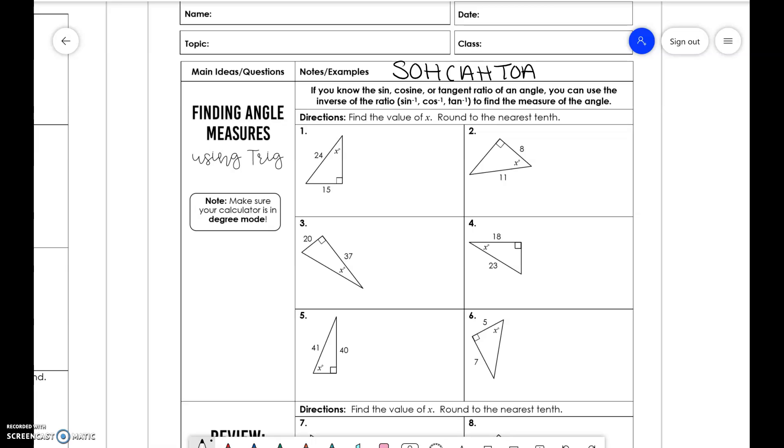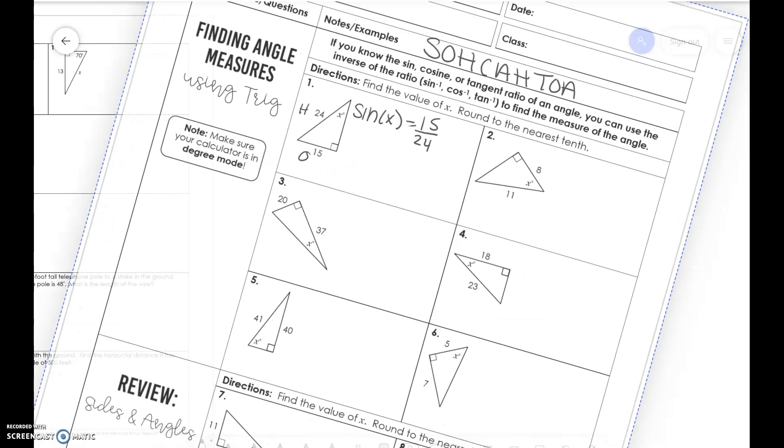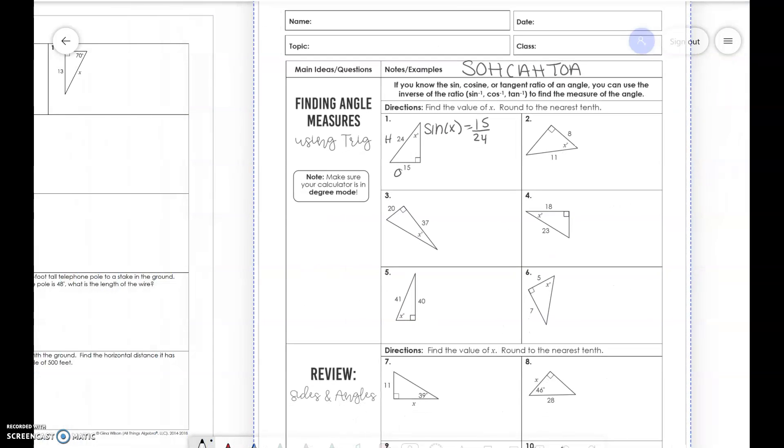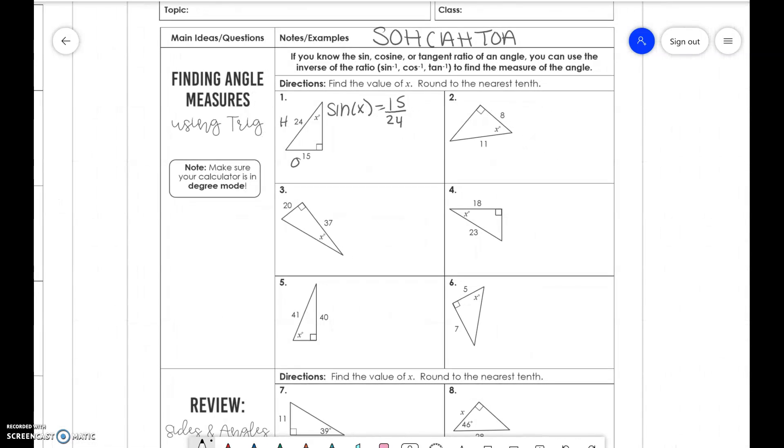So for this problem we have opposite and hypotenuse so we're going to use sine and remember we're going to do sine of x is equal to 15 over 24. So now when we're trying to solve for this number that's inside our trig function, we need to use the functions sine inverse, cosine inverse, and tangent inverse. So if you have a scientific calculator you're going to press your second button and then the sine function to bring it up. So x is equal to sine inverse of 15 over 24, so x is equal to 38.7 if you round.